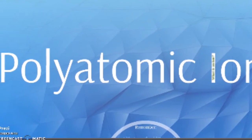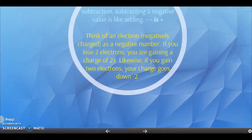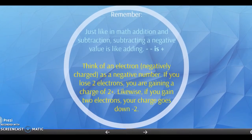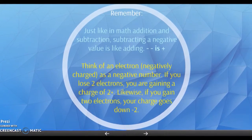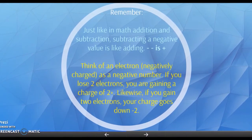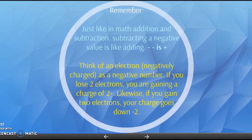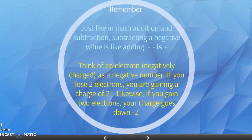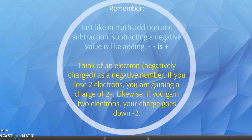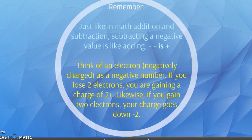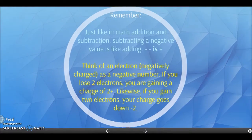This polyatomic ion acts as a unit in chemical reactions. Now remember, just like in math addition and subtraction, when you subtract a negative value it's like you're adding. So negative and negative is positive. Removing electrons will give you a more positive charge. Likewise, if you gain two electrons, you're gaining something negative, so your charge goes down.